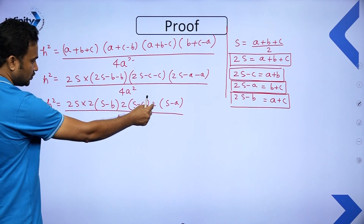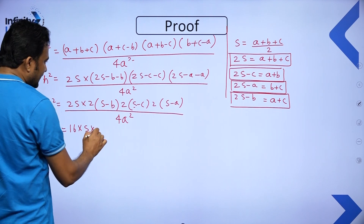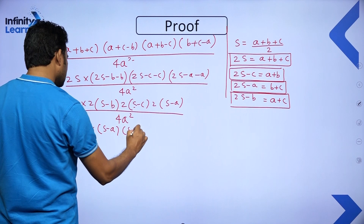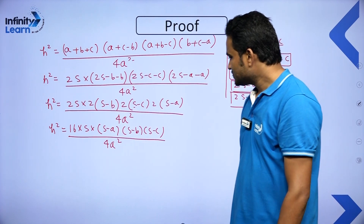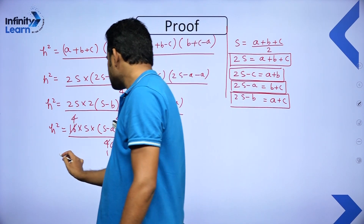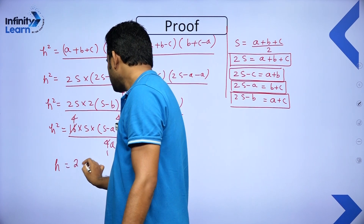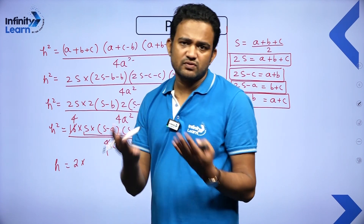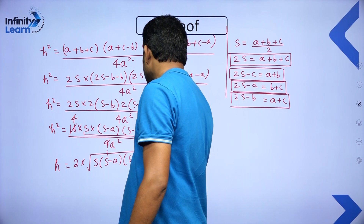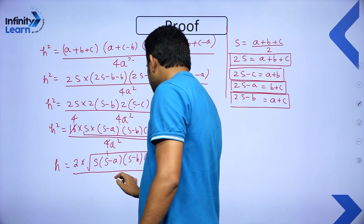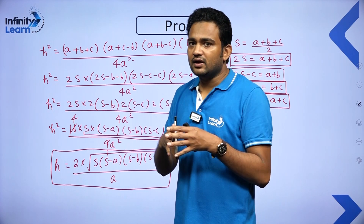This is the formula for the altitude H with base A, given the three sides. If you want the altitude for base B or C, simply replace A with B or C respectively in the denominator. This altitude formula gives us everything we need to compute the area.